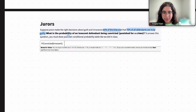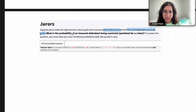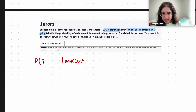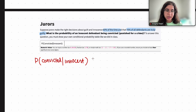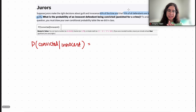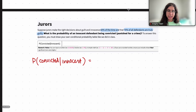So we want to find the probability of an innocent defendant being convicted. In probability statement form, given that an individual was innocent, what is the probability that they were convicted? I think the best way to go about these conditional probability questions is to make a table.